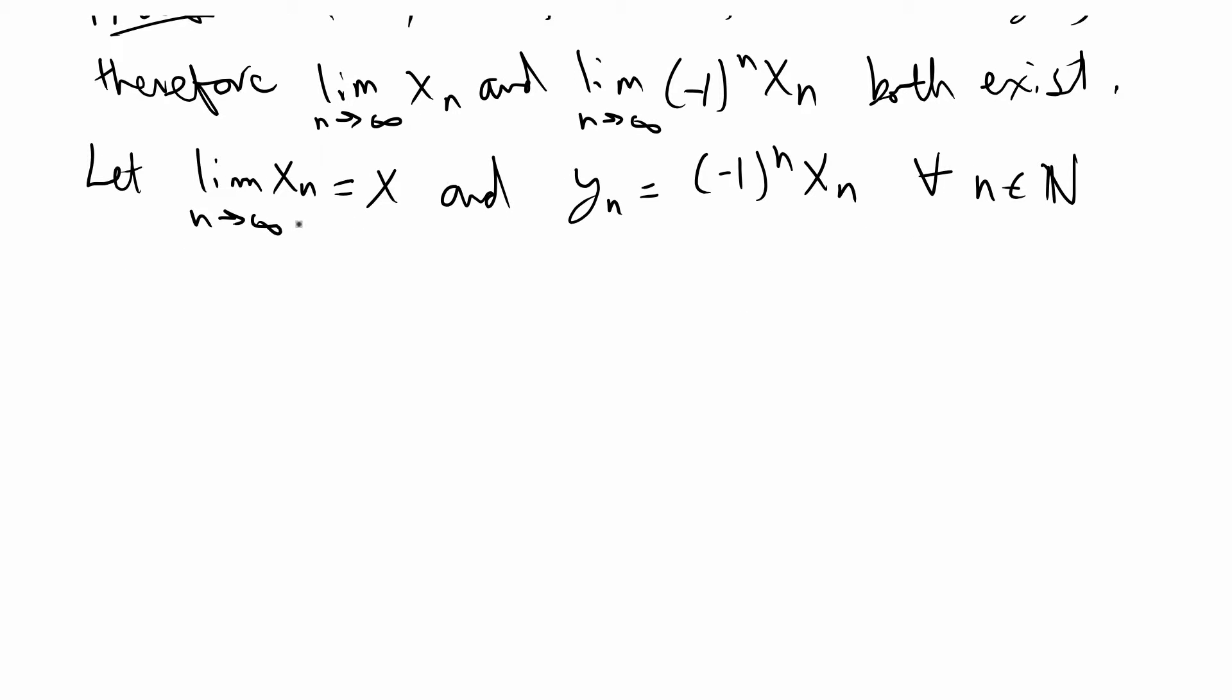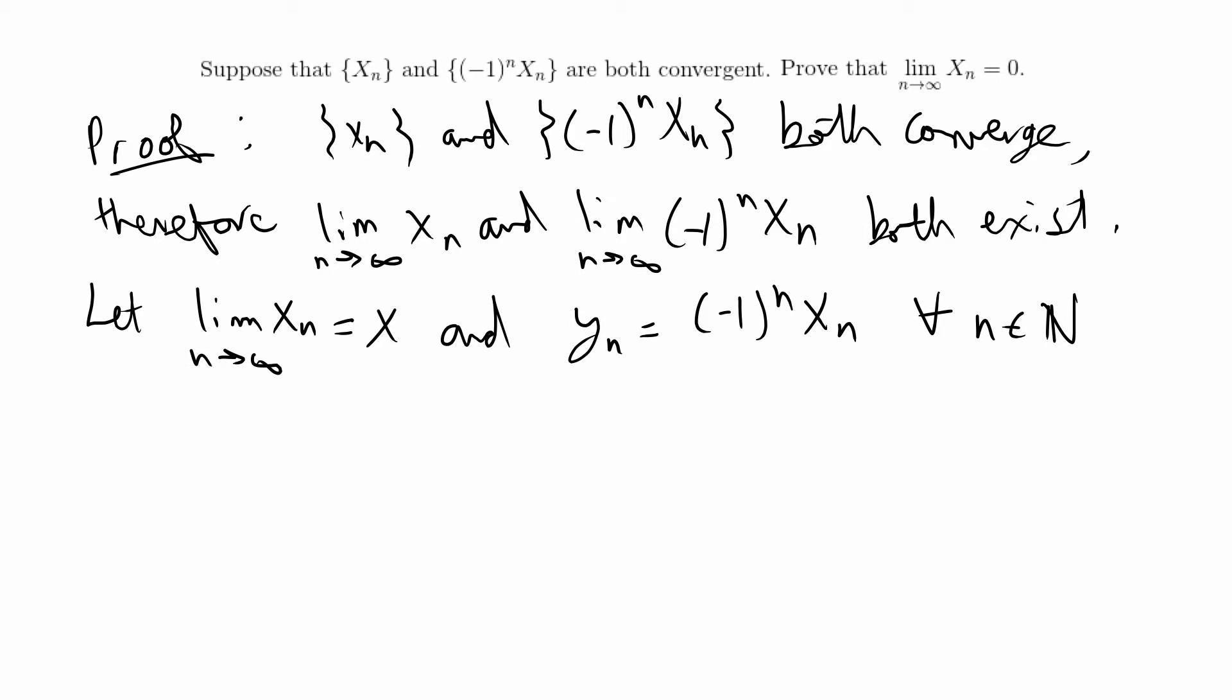Another thing that we know just from what we're given is that because a limit exists, we can say that the subsequence of X_n and Y_n both must converge to the same limit. There's a theorem that says if a sequence converges, then every subsequence converges to the same limit.